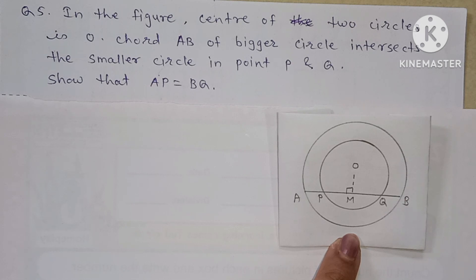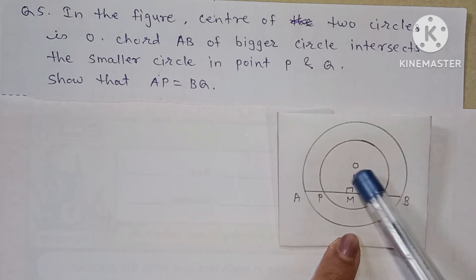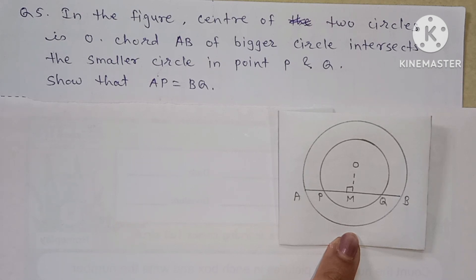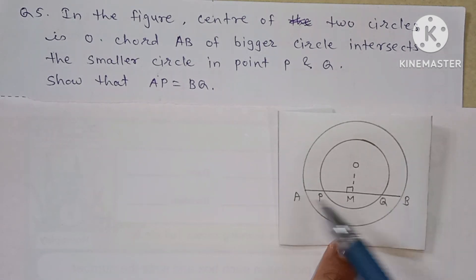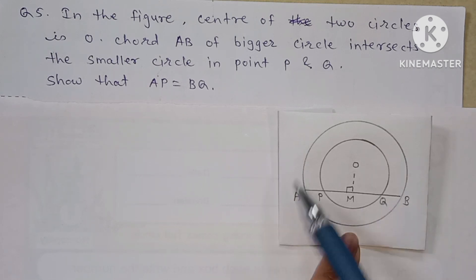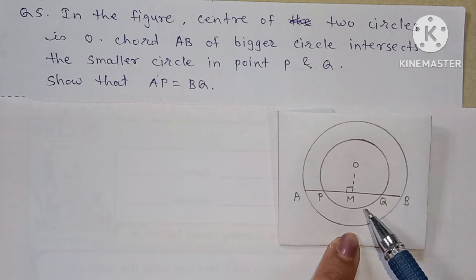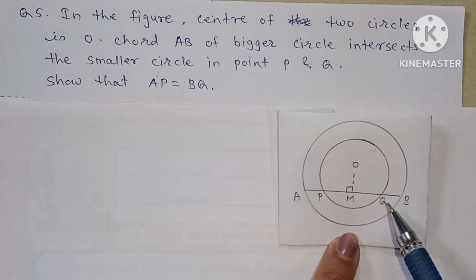In the figure, there are two circles with the same center O. Chord AB of the bigger circle intersects the smaller circle at points P and Q. We need to show that AP is equal to BQ. Here, AB is the chord of the bigger circle, and P and Q are the points where it touches the smaller circle. We must show that the distances AP and BQ are equal.